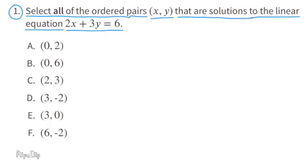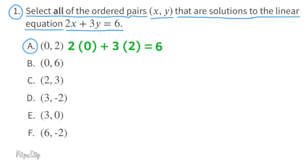2x plus 3y equals 6. Let's take a look at the first set of ordered pairs and substitute 0 for the x variable and 2 for the y variable. That would be 2 times 0 plus 3 times 2 equals 6. 2 times 0 is 0 and 3 times 2 equals 6. 0 plus 6 equals 6, so A is a solution for the linear equation.